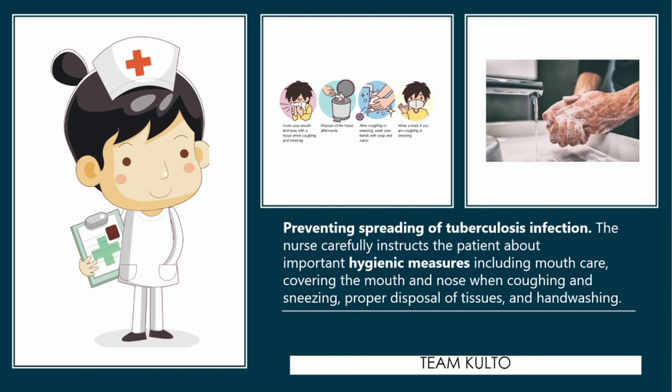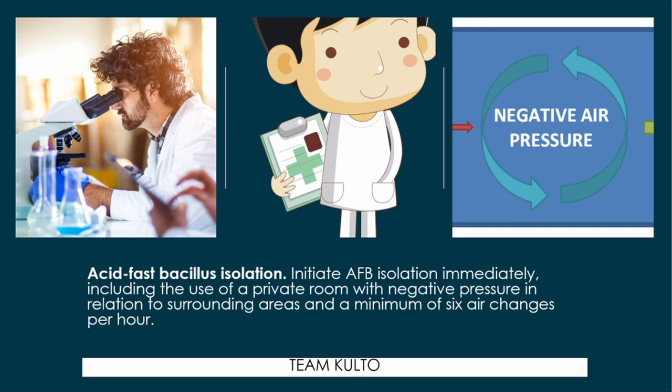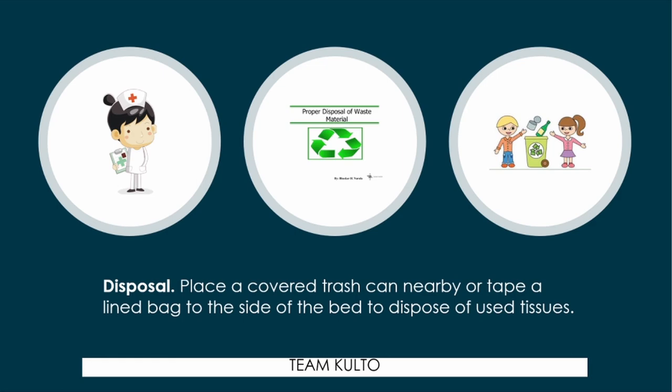Acid-fast bacillus isolation — the nurse should initiate AFB isolation immediately, including use of a private room with negative pressure in relation to surrounding areas, and a minimum of 6 air changes per hour. Place a covered trash can nearby or tape a lined bag to the side of the bed to dispose of used tissues properly, to prevent the spread of infection.